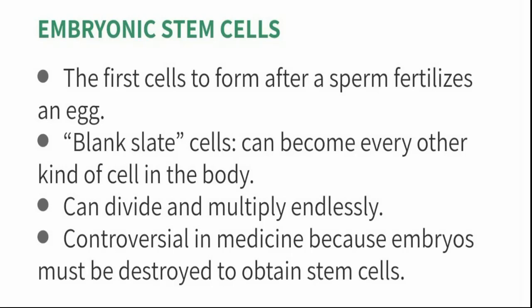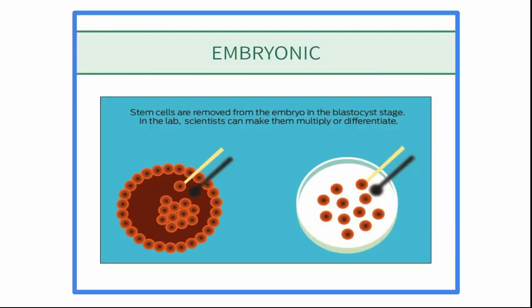Let's learn about types of stem cells. Embryonic stem cells are the first cells to form after a sperm fertilizes an egg. They are called blank slate cells — just as on a blank slate we can write anything, embryonic stem cells can become every other kind of cell in the body. They can divide and multiply endlessly, but they are controversial in medicine because embryos must be destroyed to obtain them. They are removed from the embryo in the blastocyst stage, and in the lab scientists can make them multiply or differentiate.